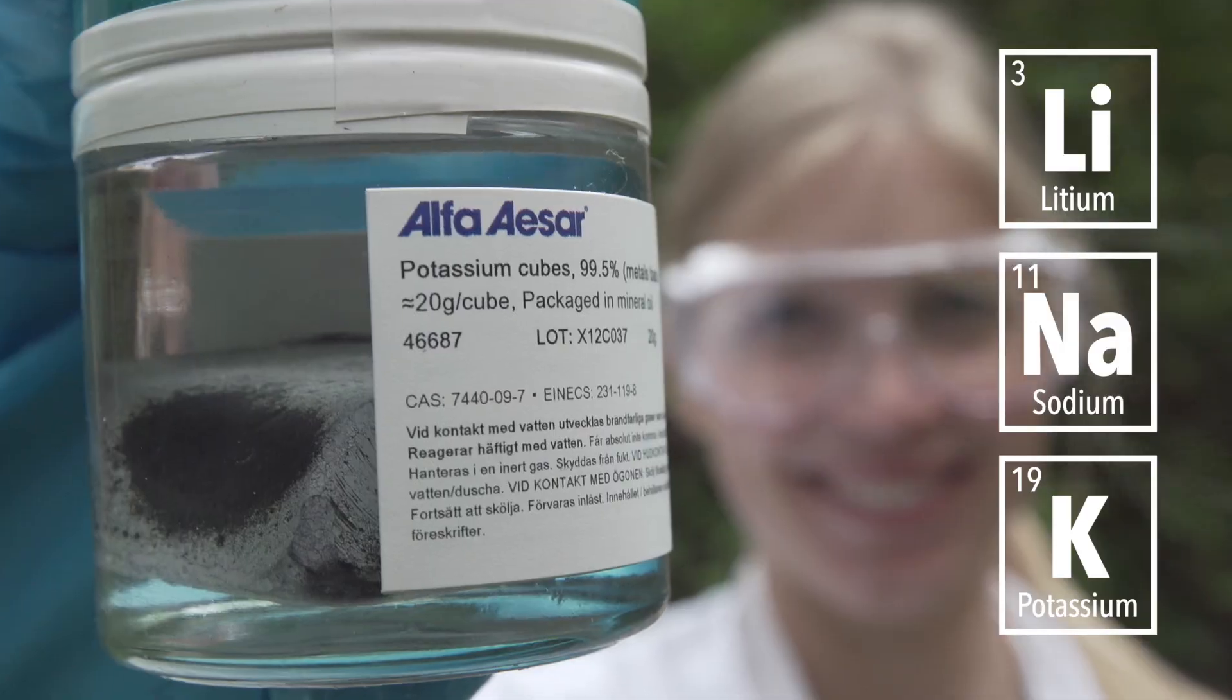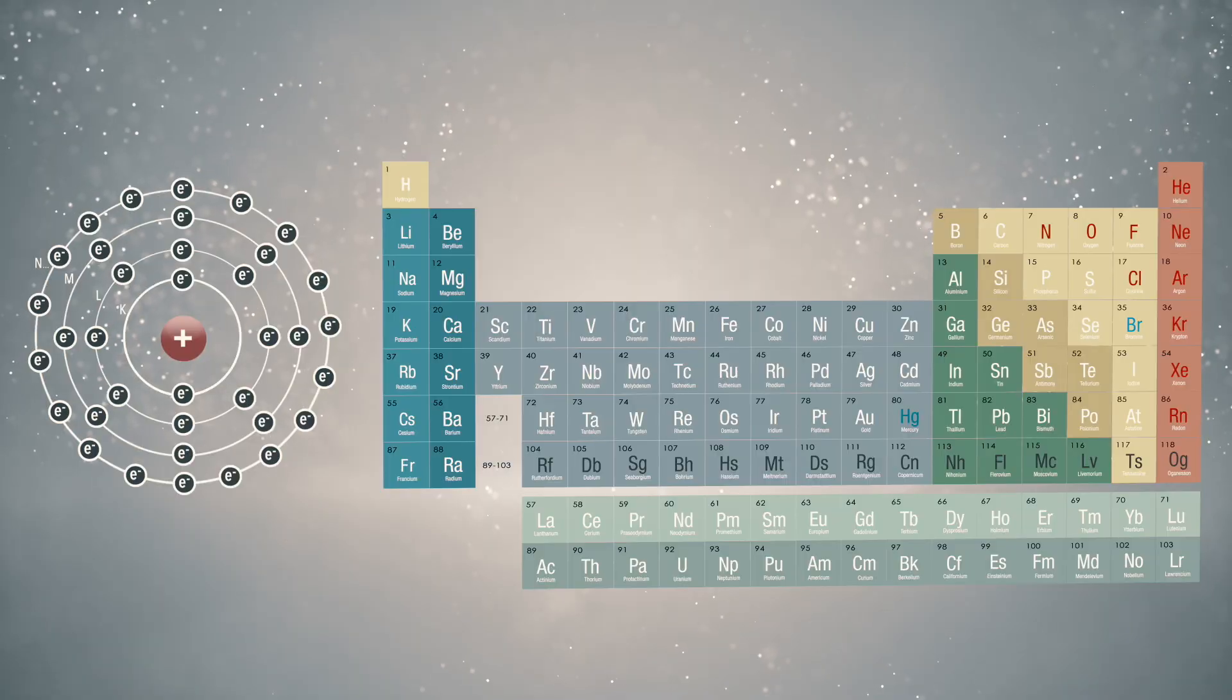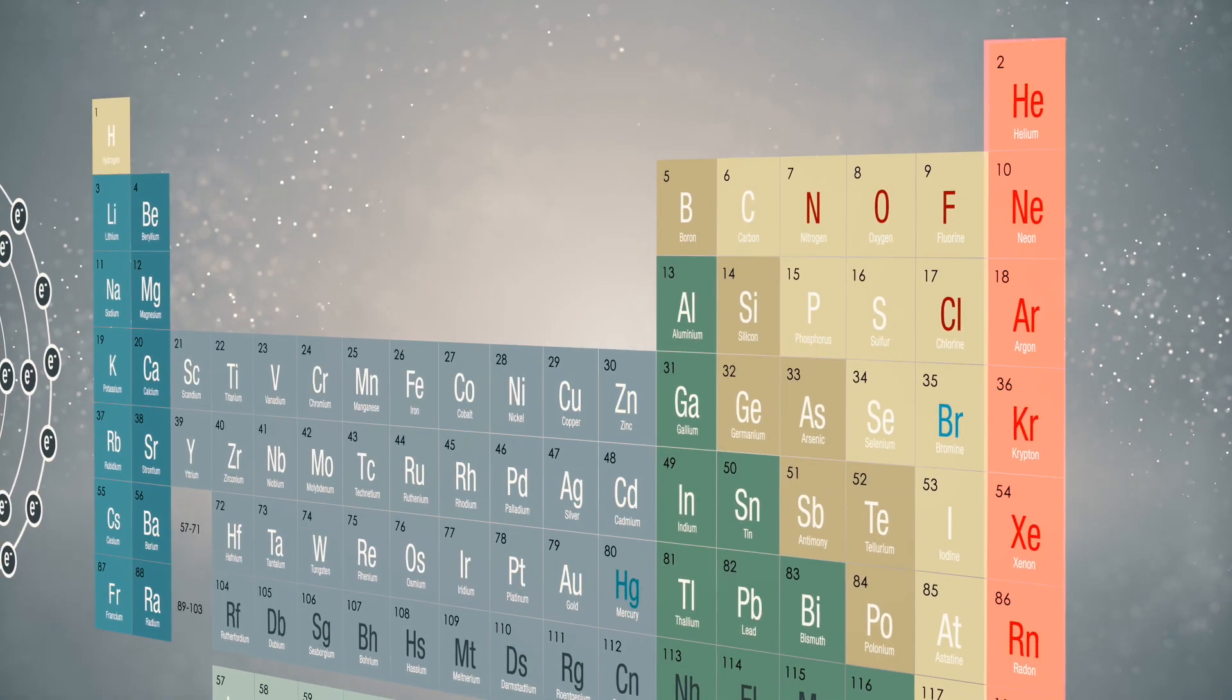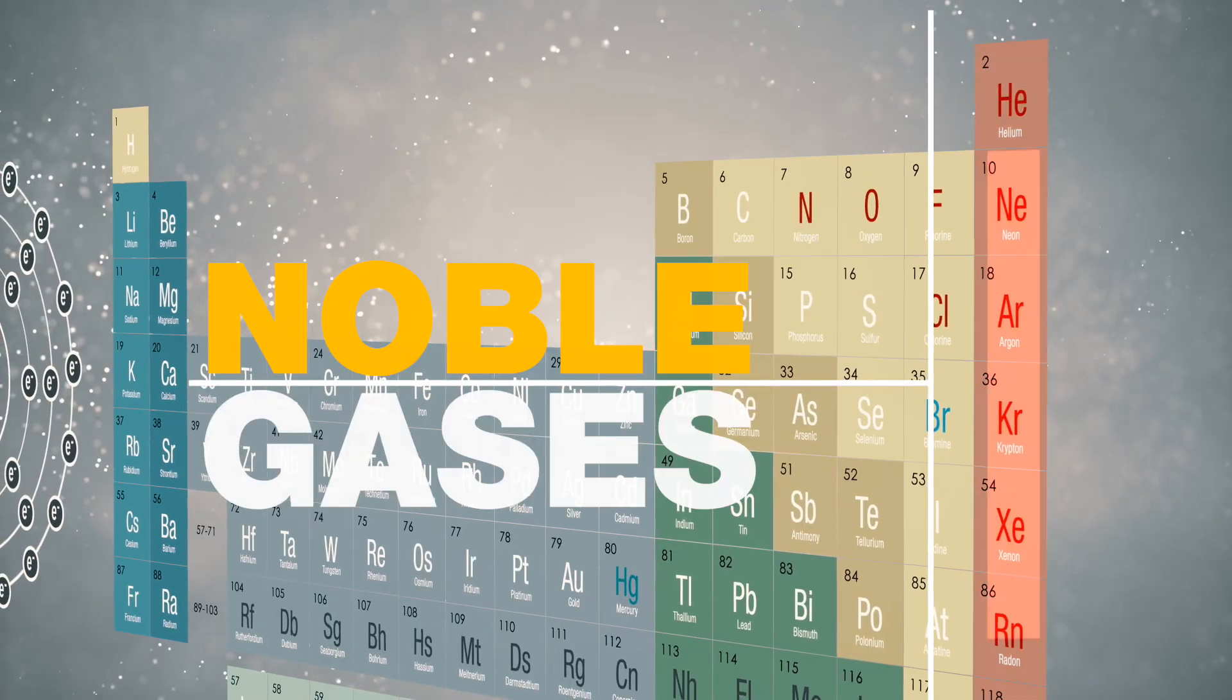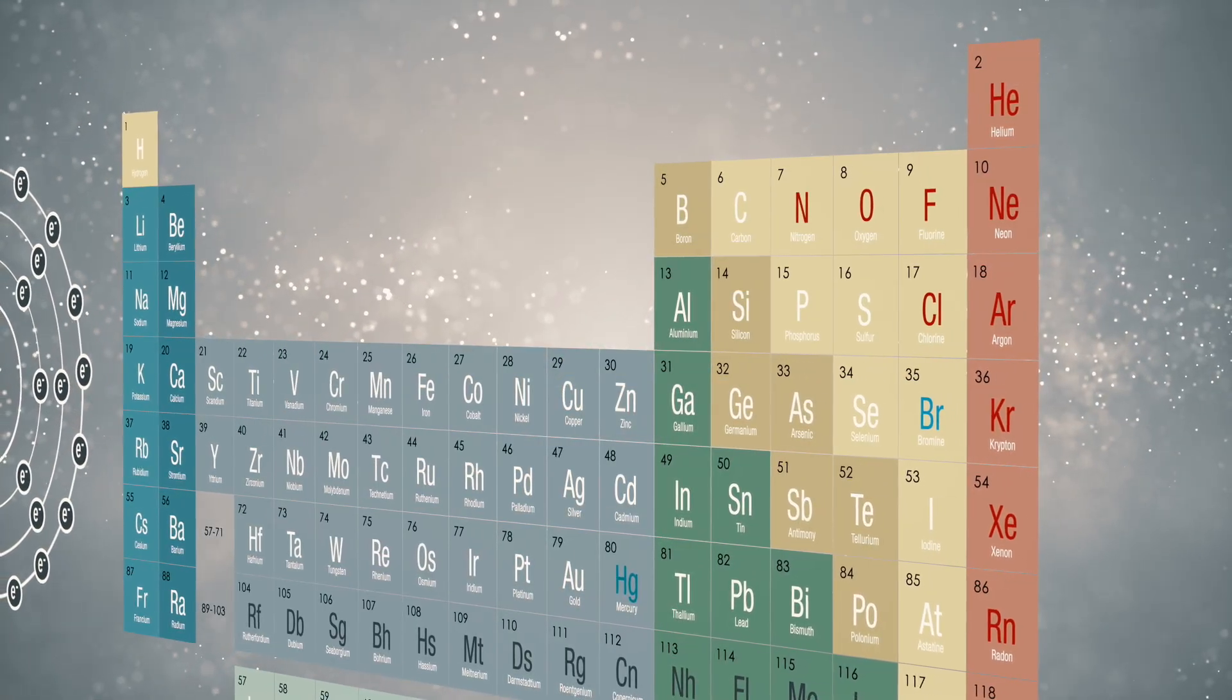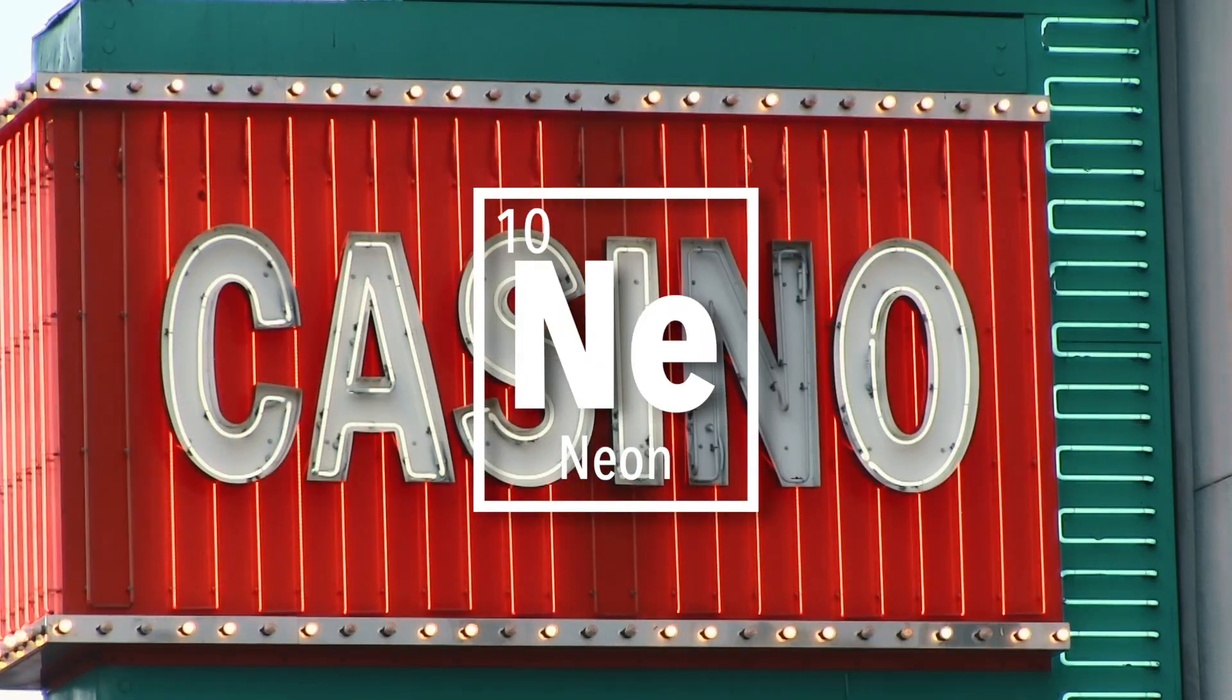So because of this, elements in the same column generally share similar chemical properties. All the way to the right here, we have a column with what is called the noble gases. Their electron shells are instead all full, which makes these elements extremely stable and not at all interested in taking part in any chemical reactions.